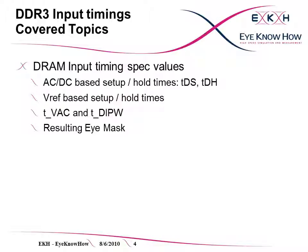The following input timing parameters out of the DRAM specification will be described: the AC-DC based setup and hold times TDS and TDH; the VREF based setup and hold times, which if present in the specification are for reference only; TVAC, the time after a valid transition over or below the AC level during which the signal needs to stay above or below the AC level; TDIPW, the minimum data input pulse width; and finally, the resulting eye mask based on these parameters.